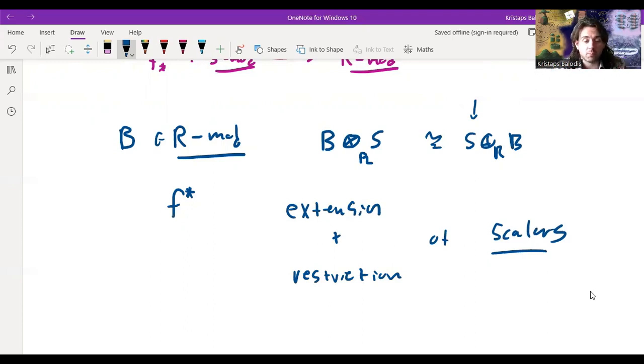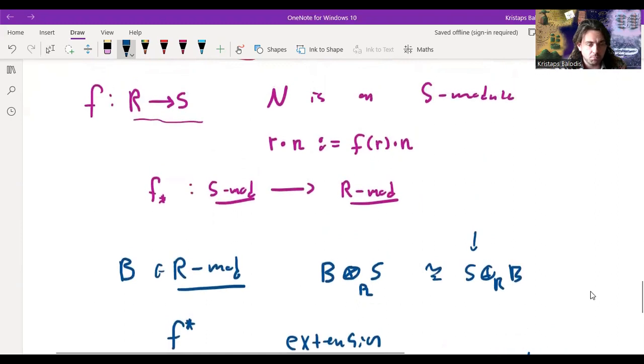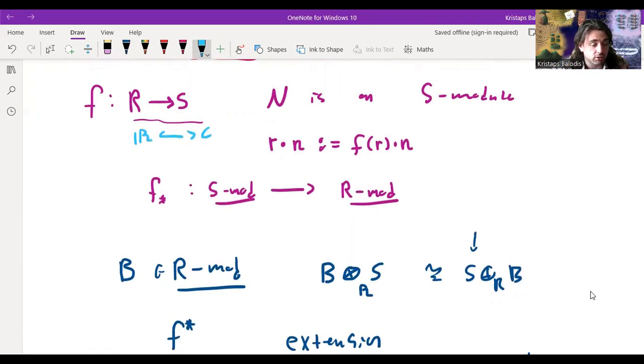And so what we're going to do then is now we can define a tensor product. So now I can define the tensor product. If I have an R module B, then I can define the tensor product B tensored with S over R, and this will actually give me an S module because now I can simply act just by multiplying on this factor of S here. And so this generalizes the tensor product, and I'm going to call this one F upper star. And these two together give us what's called the extension and restriction of scalars.